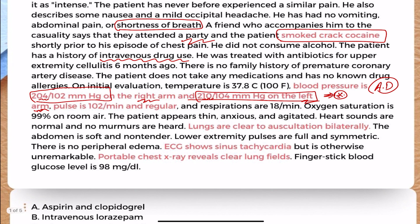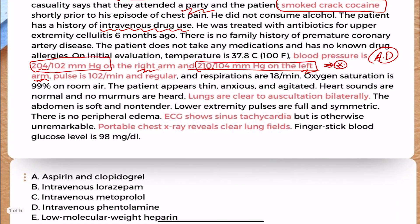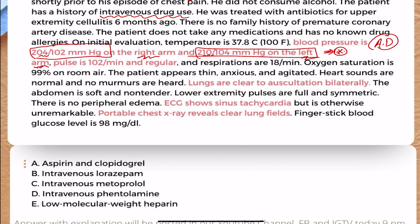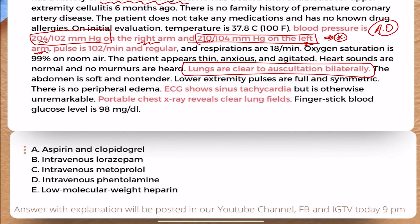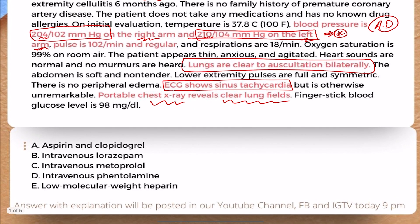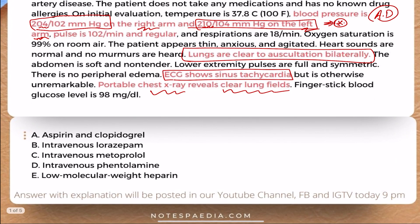Respirations are 18 per minute, oxygen saturation is 99% on room air. The patient appears thin, anxious, and agitated. Heart sounds are normal and no murmurs are heard. Lungs are clear to auscultation bilaterally. The abdomen is soft and non-tender, lower extremity pulses are full and symmetric, and there is no peripheral edema. The ECG shows sinus tachycardia but is otherwise unremarkable. The portable chest X-ray reveals clear lung fields, helping to rule out a non-cardiac or pulmonary cause for the chest pain.